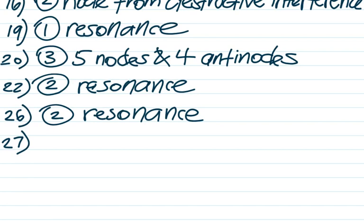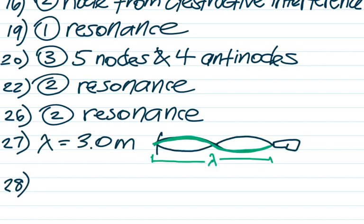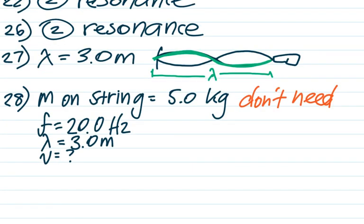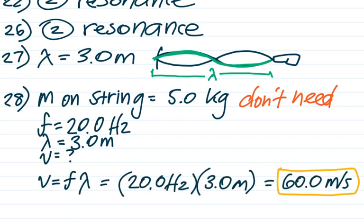Number 27 involves a drill making vibrations in a rope with a hanging mass. The frequency of the drill is 20 Hz. From the picture I can see that one complete wave cycle spans 3 meters, so the wavelength is 3 meters. Number 28 asks for the wave speed: using v = fλ, that's 20 Hz times 3 meters = 60 meters per second.